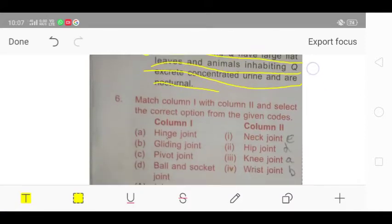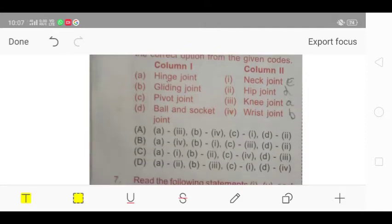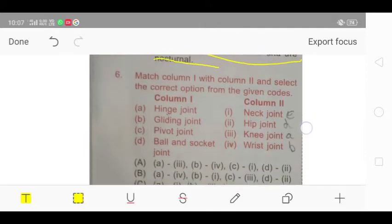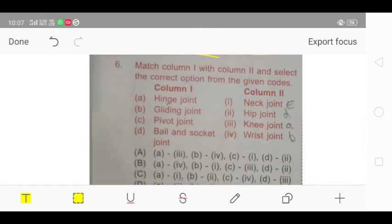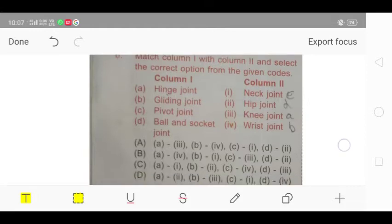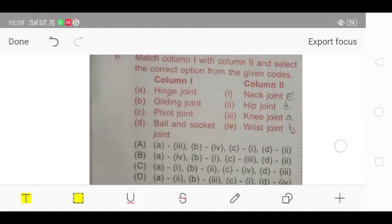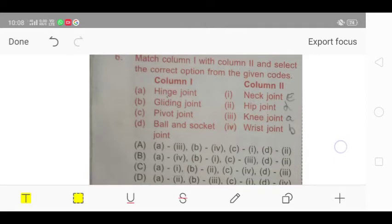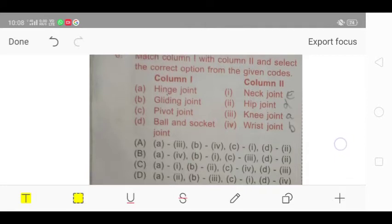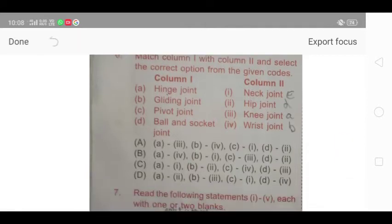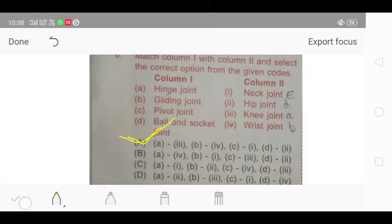Next is question number 6. Match column 1 and column 2 and select the correct option from the given codes. I have matched them, and the correct answer for question number 6 is option number A, which says that A would be matched with 3, B with 4, C with 1st, and D with 2nd.